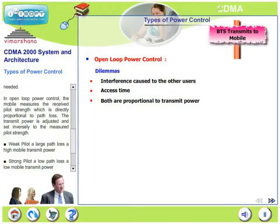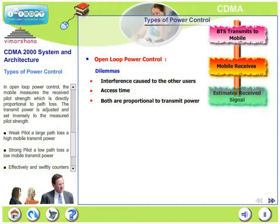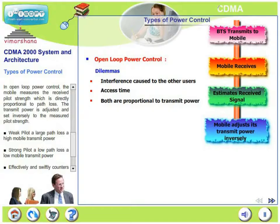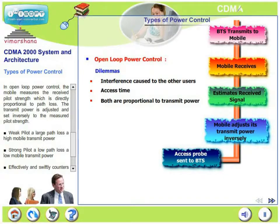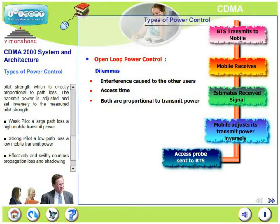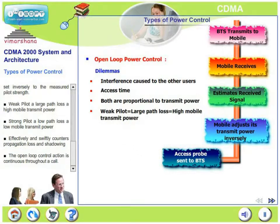In open loop power control, the mobile measures the received pilot strength, which is directly proportional to path loss, and sets its transmit power inversely to the measured pilot strength. If the received pilot is weak, the transmit power of the mobile is increased. This is analogous to people shouting on a phone call when they receive a weak signal — though the received signal belongs to the downlink and the transmitted signal belongs to the uplink. Weak pilot means large path loss and therefore high mobile transmit power; strong pilot means low path loss and therefore low mobile transmit power. Open loop power control counters propagation loss and shadowing very swiftly, and the open loop control action is continuous throughout a call.